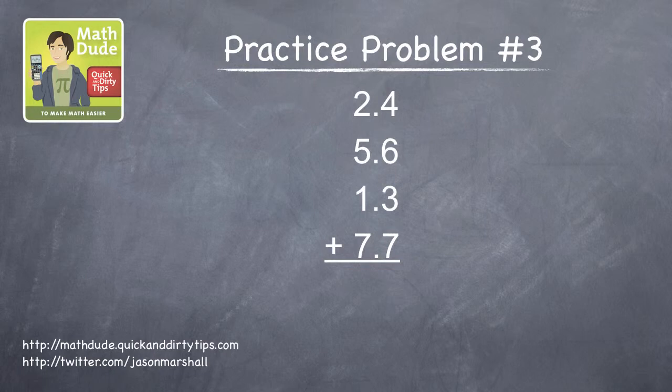Finally, in the third practice problem, we have a bunch of numbers that have both whole number and decimal parts. Let's start by using the second of our two quick calculating tips, adding from left to right instead of from right to left.